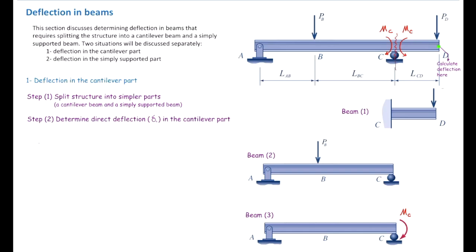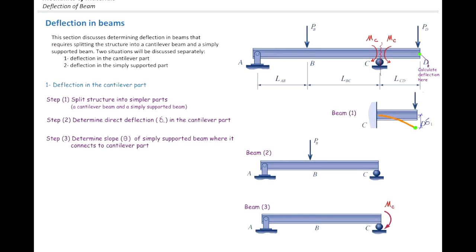In the second step, determine the direct deflection in the cantilever part using the appropriate table value. In the third step, determine the slope of the simply supported beam where it connects to the cantilever part — in this figure that connection is at point C, so we determine the slope of this beam at point C.